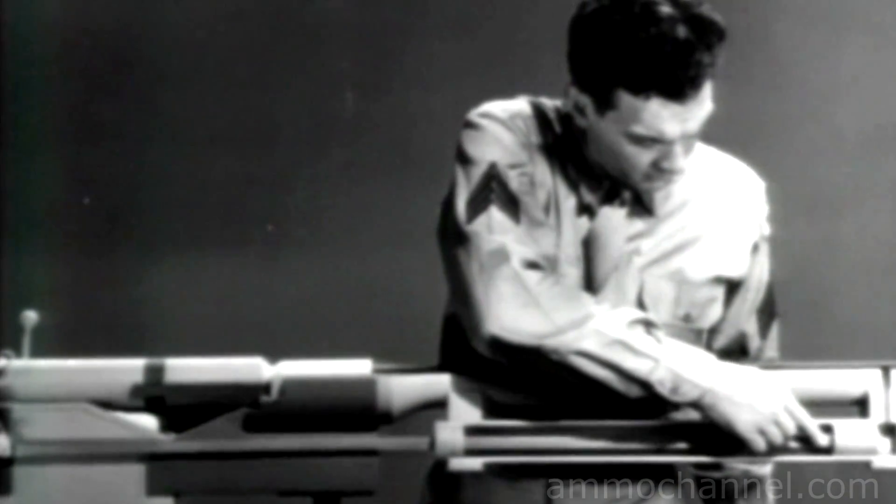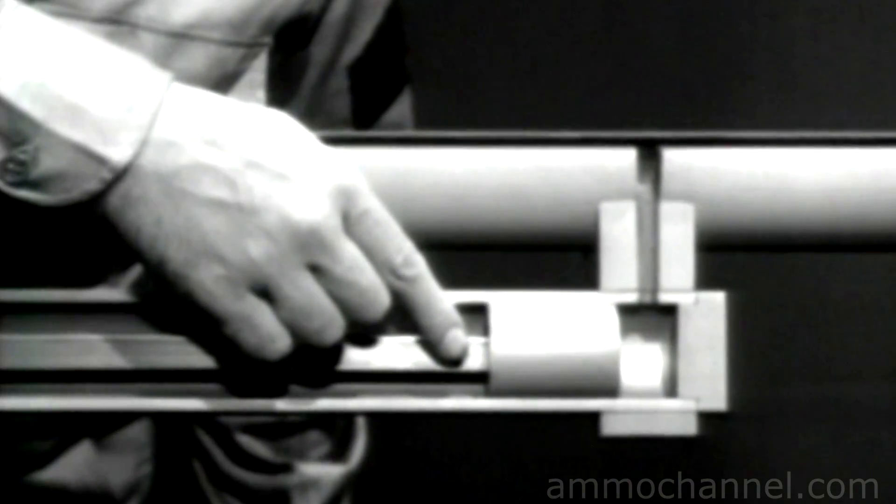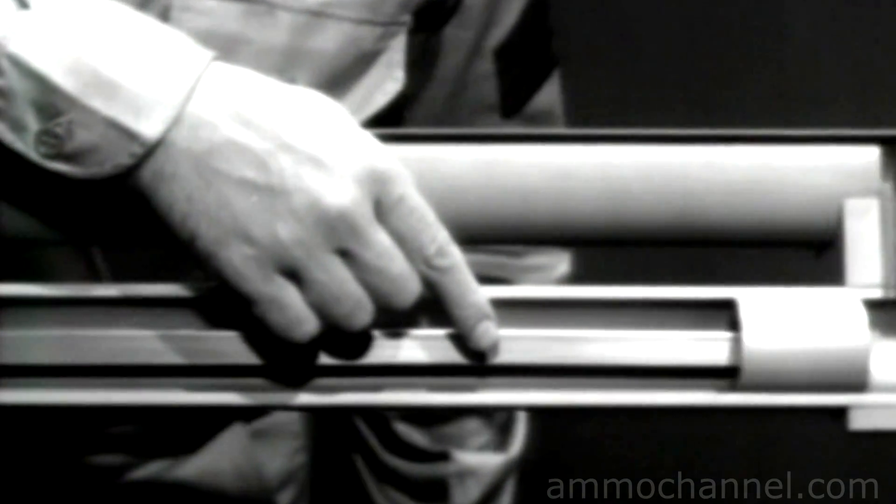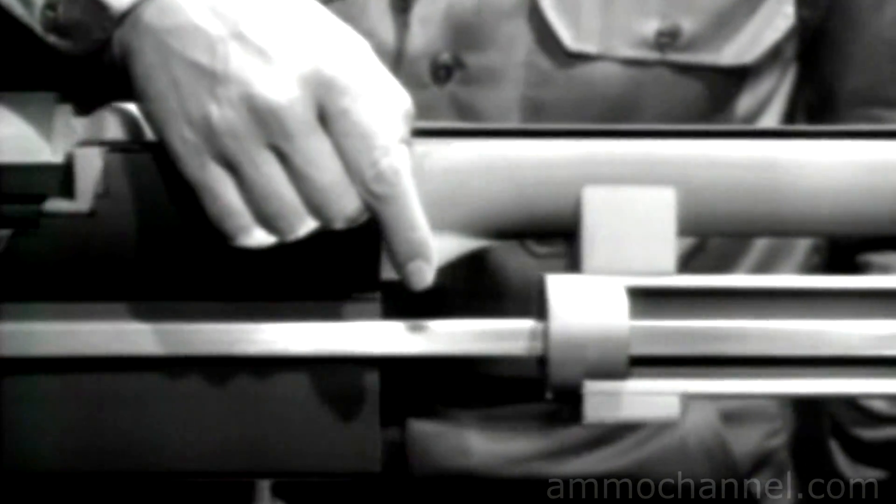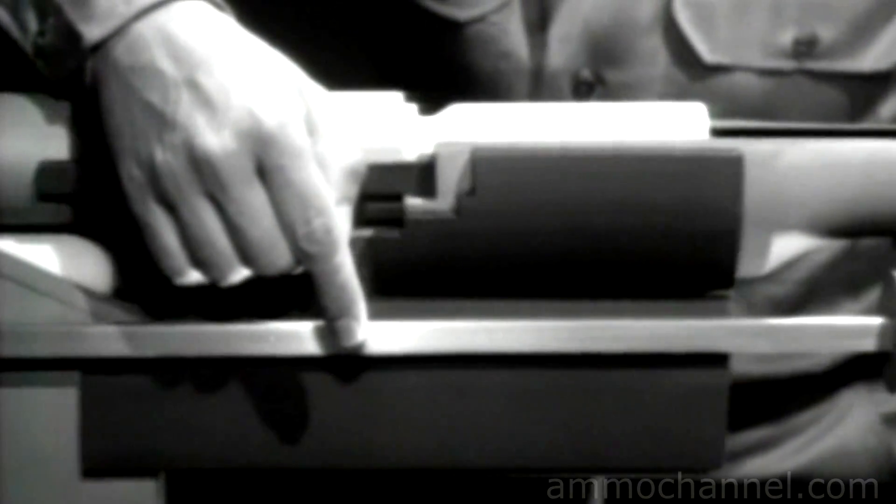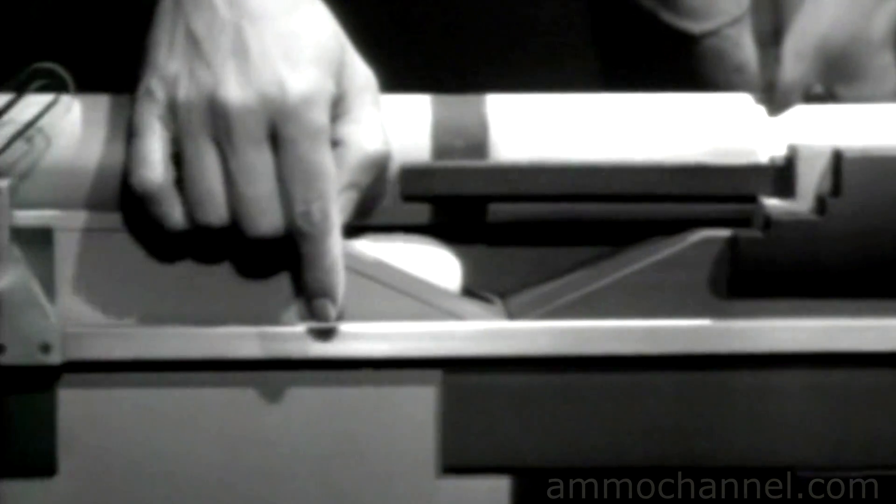The rod is mounted with one end attached to the piston. It passes through the gas cylinder, and the other end is attached to the bolt.